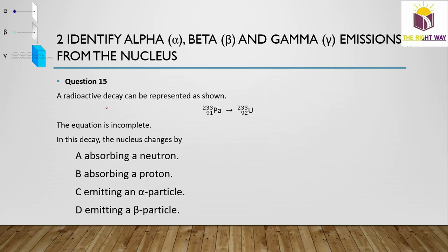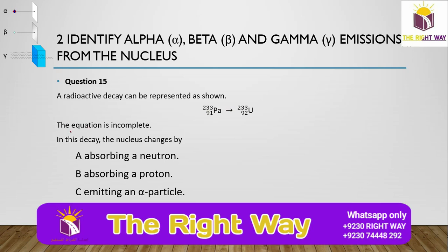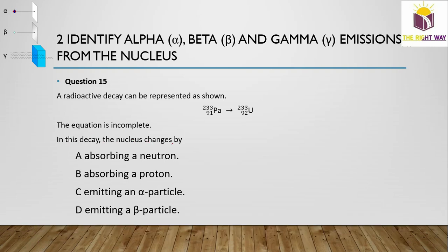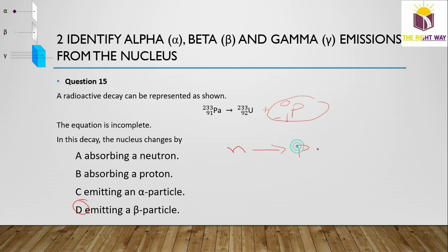Question 15: A radioactive decay equation is incomplete, going from atomic number 91 to 92. Since the atomic number increases by one, a particle with charge −1 and mass 0 is emitted — this is a beta particle (⁰₋₁e). In beta decay, the mass number remains the same and the atomic number increases by one, because a neutron decays to form a proton and an electron.